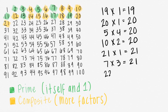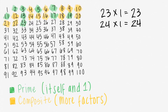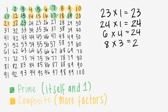22 times 1 equals 22, but so does 11 times 2, so 22 is composite. 24 times 1 equals 24. 8 times 3 equals 24, and 12 times 2 is also 24, so 24 is composite.